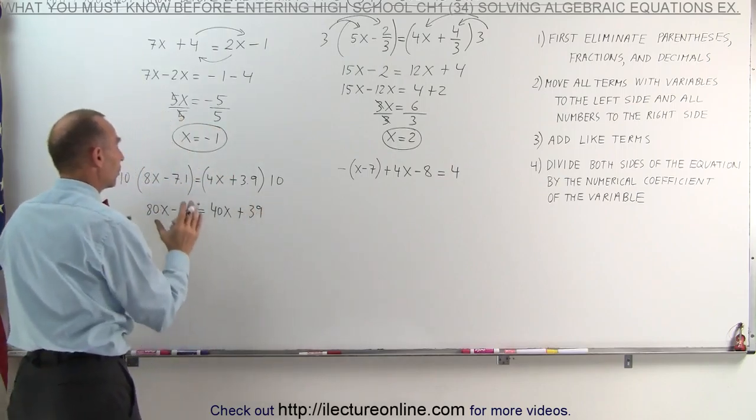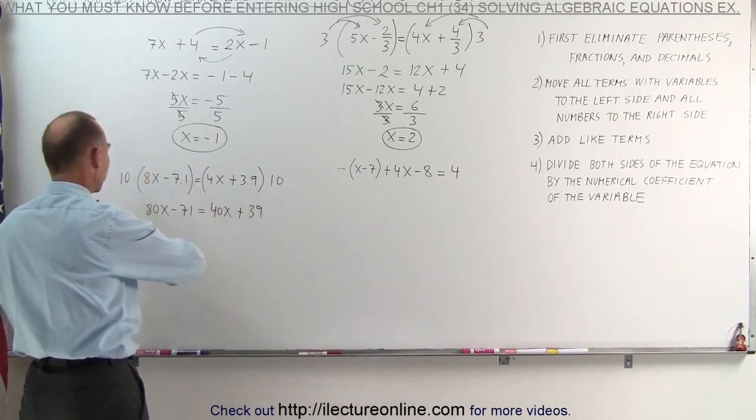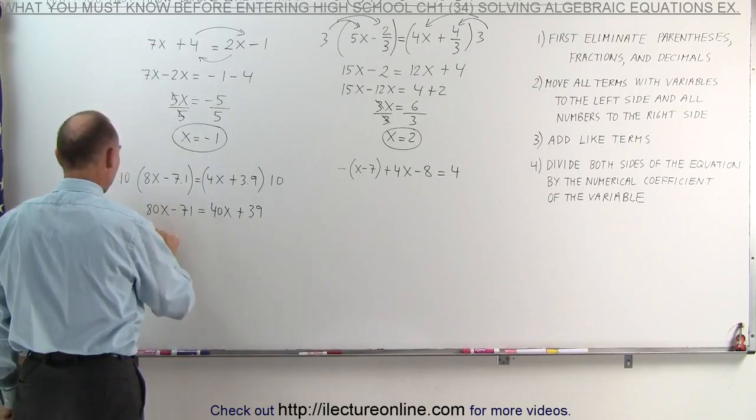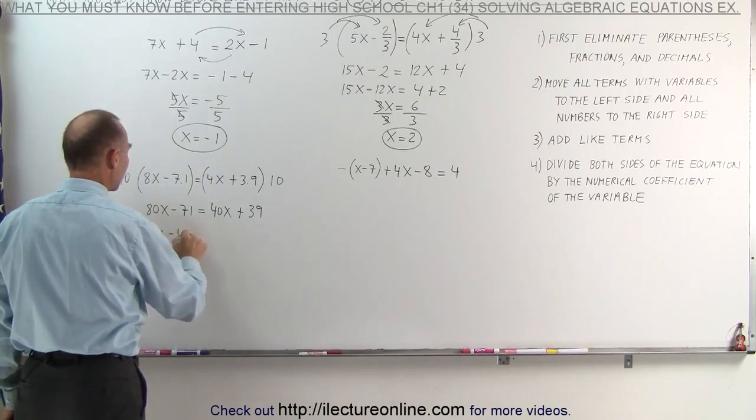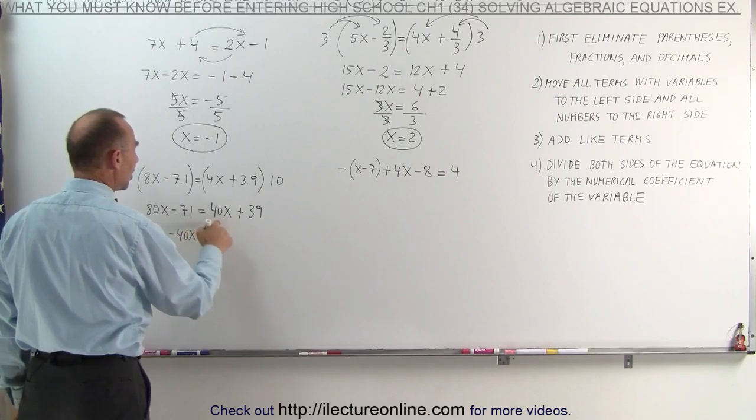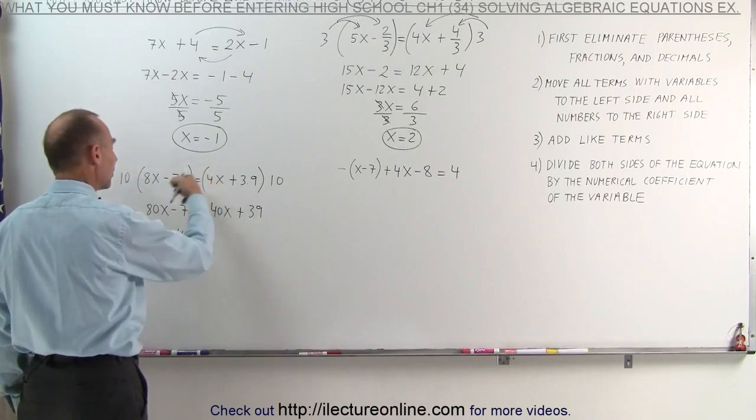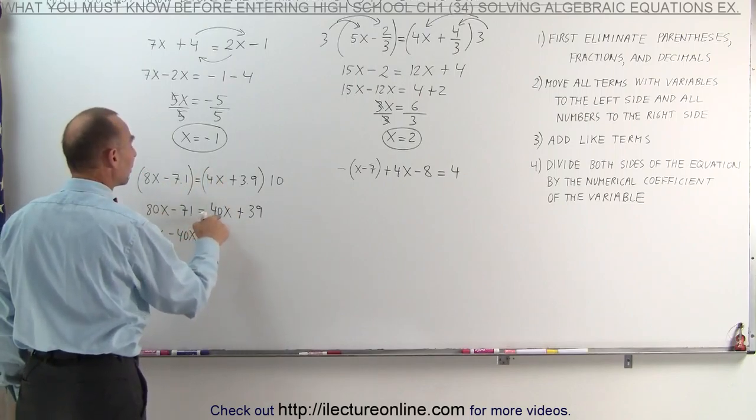Now we move all the terms with the variable to the left side, all the other numbers to the right side. 80x minus 40x. Remember, the signs change from minus 40x. When we cross the equal sign, it comes up from the plus 40x. When we cross the equal sign, we get a minus 40x.